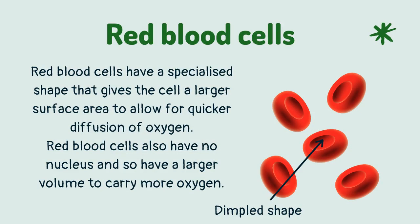Red blood cells have a specialized shape that gives the cell a larger surface area to allow for quicker diffusion of oxygen. Red blood cells also have no nucleus and so have a larger volume to carry more oxygen.